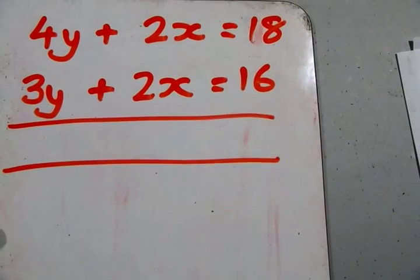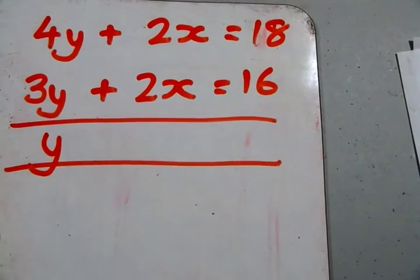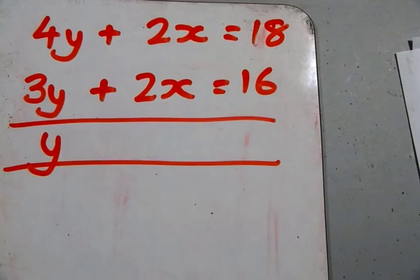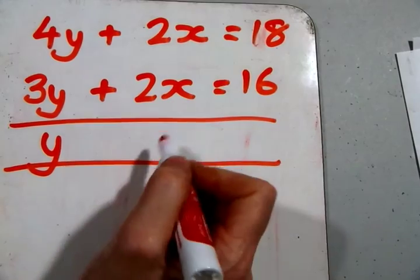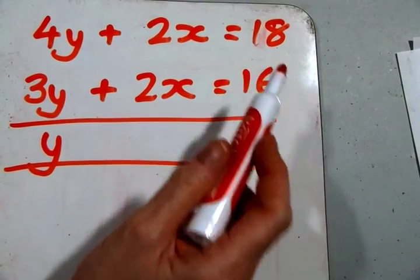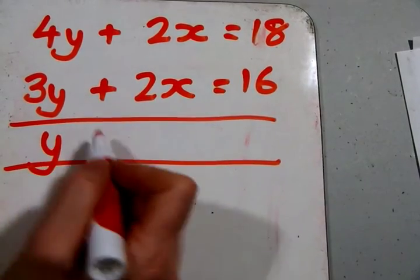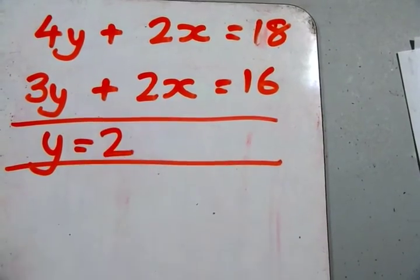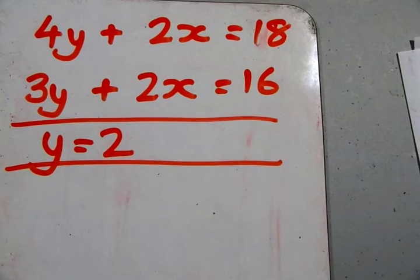4y take away 3y equals 1y. 2x take away 2x equals no x's, and 18 take away 16 equals 2. We now know that y equals 2.